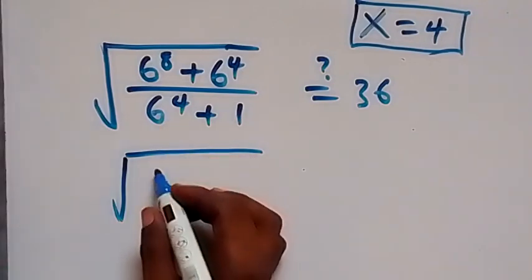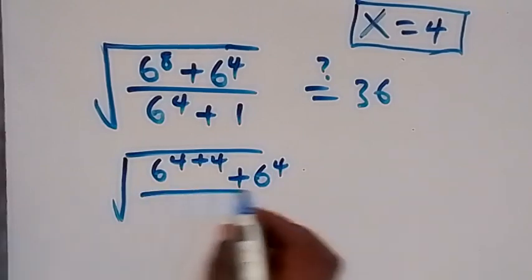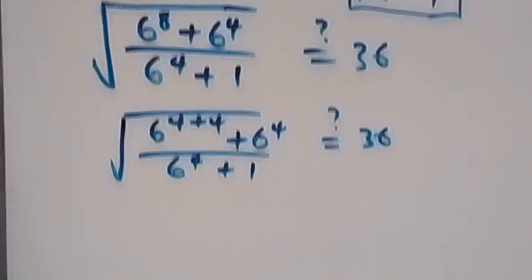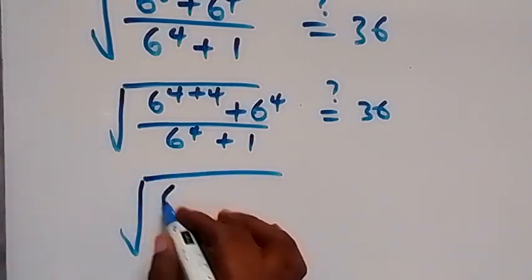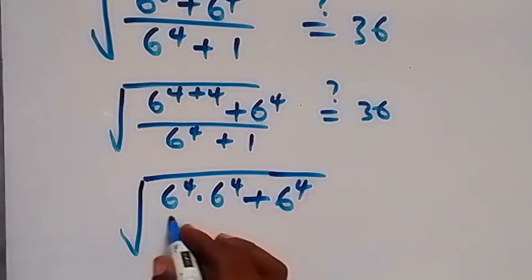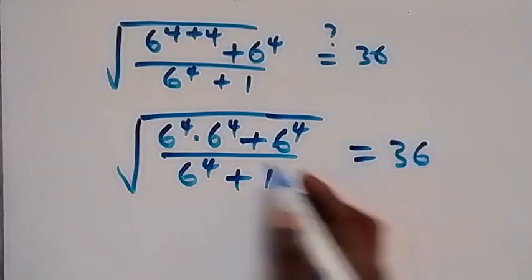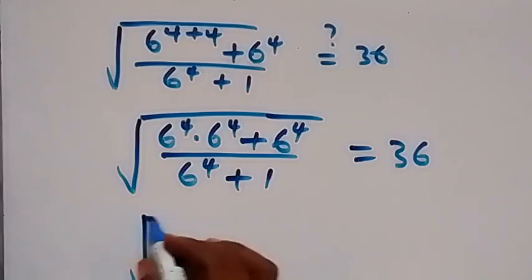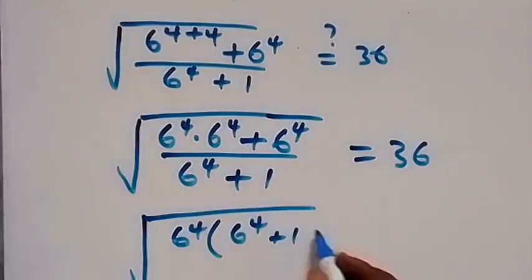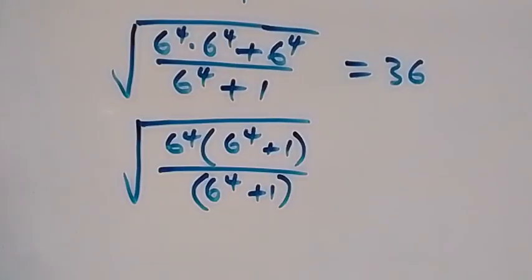From here, 6 raised to power 8 can be separated as 6 raised to power 4 plus 4. Then over 6 raised to power 4 plus 1, and we check if this equals 36. This can also be written as the square root of 6 raised to power 4 times 6 raised to power 4, plus 6 raised to power 4, over 6 raised to power 4 plus 1. We factor 6 raised to power 4 out, leaving 6 raised to power 4 plus 1 in the numerator, over 6 raised to power 4 plus 1.